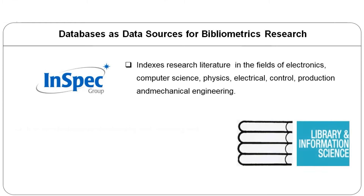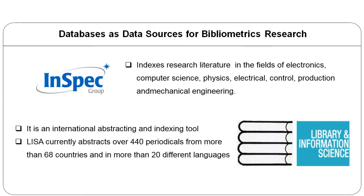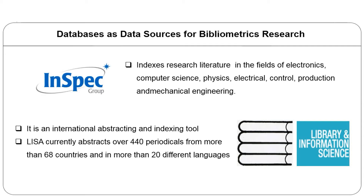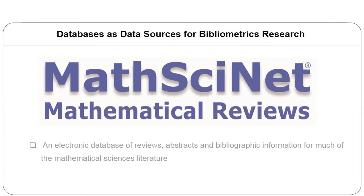In the field of library and information science, we have LISA — Library and Information Science Abstracts. It is an international abstracting and indexing tool which can be used as a data source for conducting bibliometric study in library and information science. Similarly, there are different databases in different subject fields. For example, MathSciNet is an electronic database of reviews, abstracts and bibliographic information for mathematical sciences.